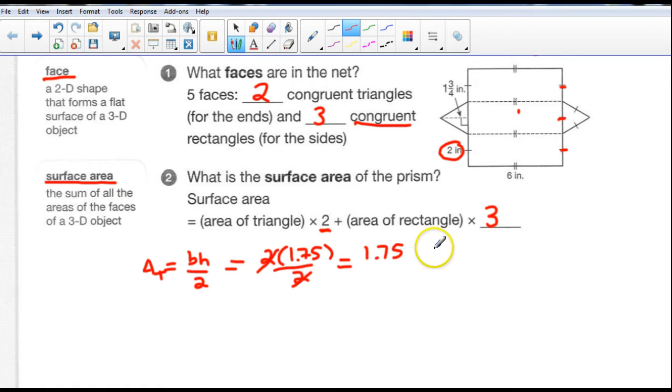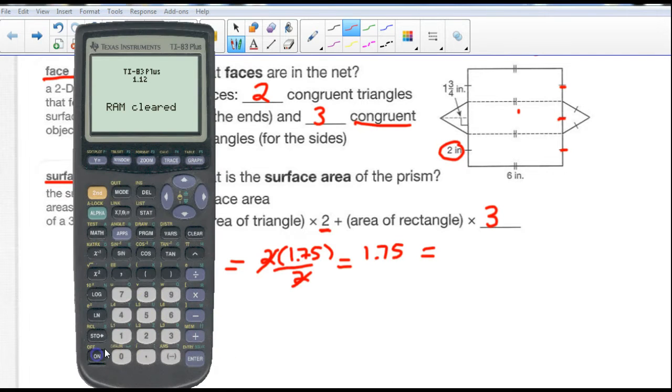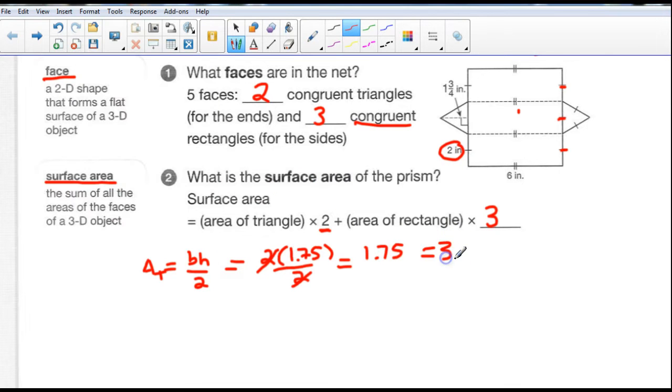Now how many triangles do we have? We've got two of them. So 1.75 plus 1.75 is equal to, well if you want to take your calculator out, you can use your calculator. If you don't trust your head math, so we can take 1.75 times 2 and we get an answer of 3.5. So this is 3.5 and our units are inches so we can say that they are inches squared. Now that's our two rectangles, or two triangles, and let's go to the rectangles.